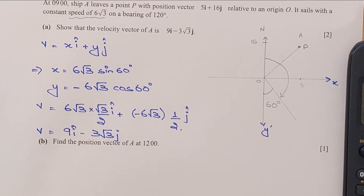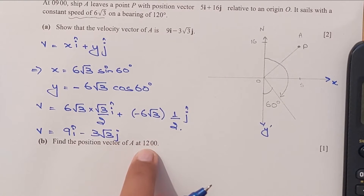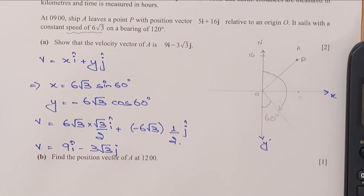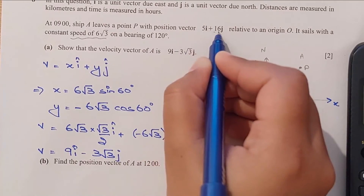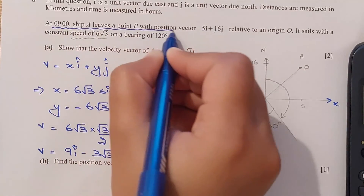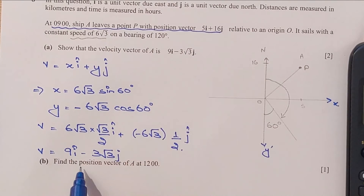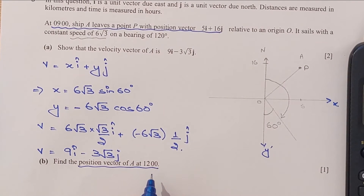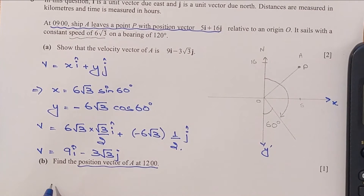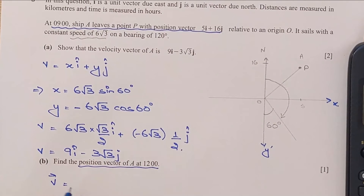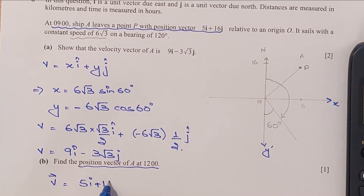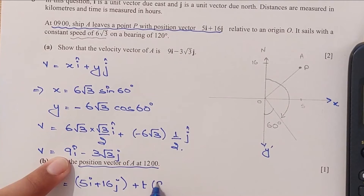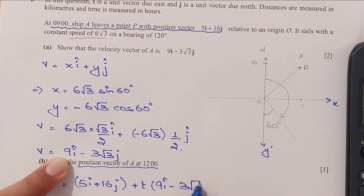For part B, find the position vector of A at 12. We have the position vector when the ship leaves point P at 9am. The position vector at any time equals the initial position vector at 9, which is 5I + 16J, plus T times the velocity vector of A, which is 9I − 3√3 J.